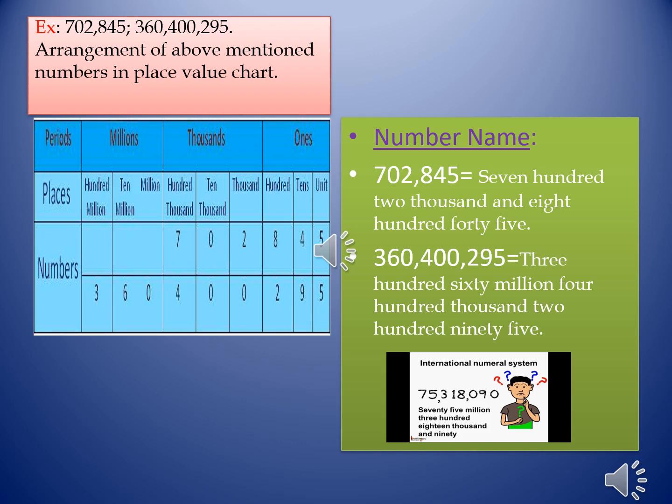Here is one example for you: 75,318,090. Insert the comma and write the number name.